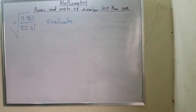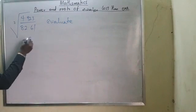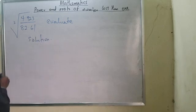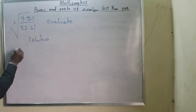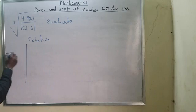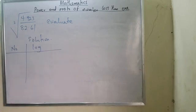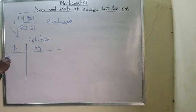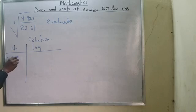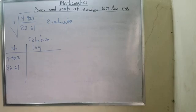Solution. What I need to do here is set up a table with two columns: Number and Log. The first thing I will do is write the numbers in standard form. I have 4.923 and 2.61.